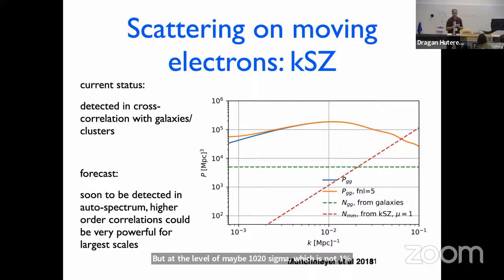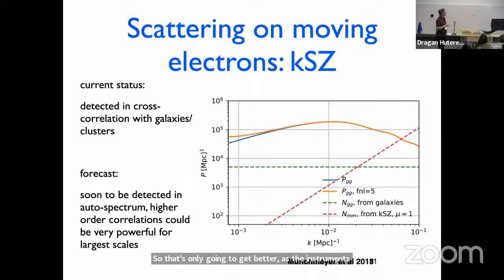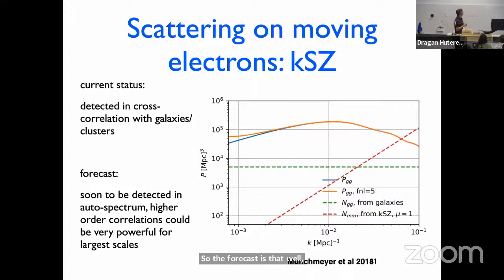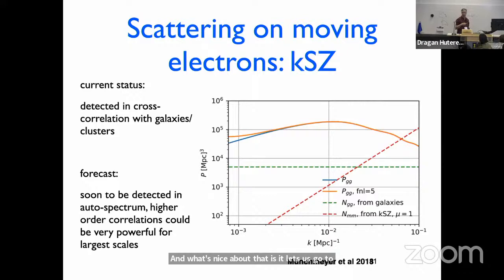That's only going to get better as the instruments get bigger, more sensitive, and cover more sky. Even with SPT-3G, we think we should be able to detect this basically right now just on its own, without having to do the cross-correlation. What's nice about that is it lets us go to reionization and see what's coming from reionization, not limited to the stuff coming from galaxies we know about.